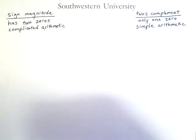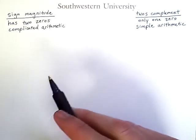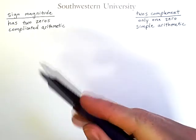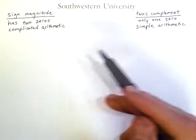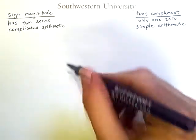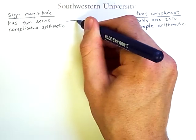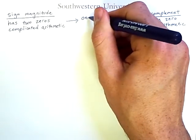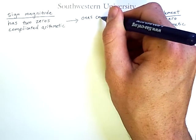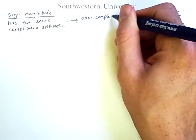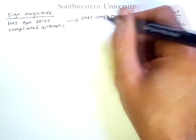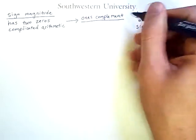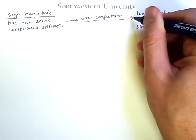First you need to know how to convert from either binary or sign magnitude to two's complement. The way that we'll do this is via an intermediary representation known as one's complement. So let's work an example.